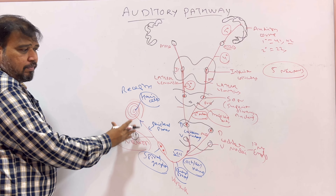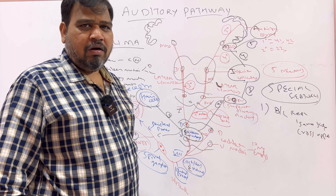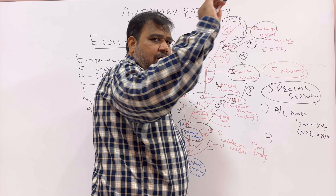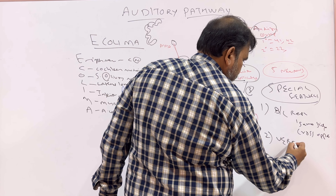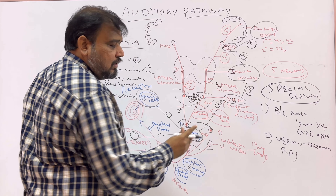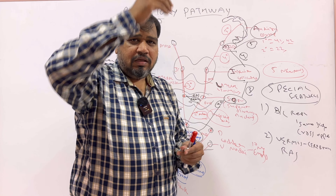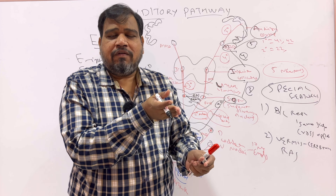Now coming to the special features of this auditory pathway. Special feature number one: bilateral representation — that is, the pathway goes to the same side as well as crossing to the opposite side. Most of the fibers cross to the opposite side via the trapezoid body. Another very important point: apart from this routine auditory pathway, there are some associated fibers which go to the vermis of the cerebellum and the reticular activating system. For example, from the cochlear nucleus, some fibers project to the reticular activating system and the vermis.